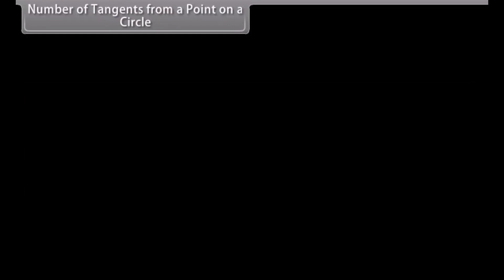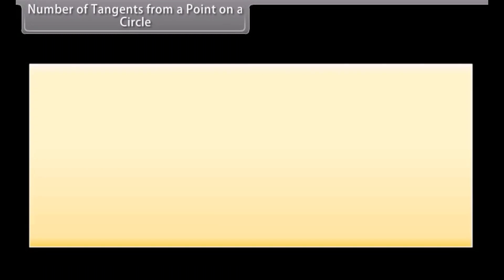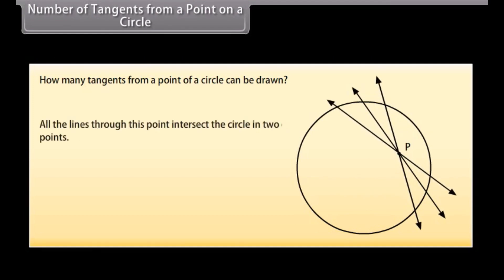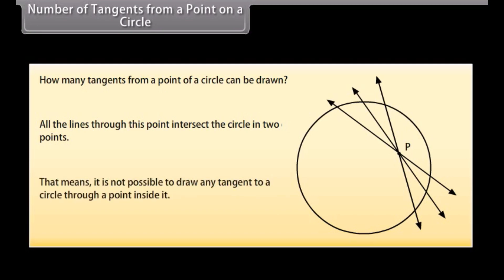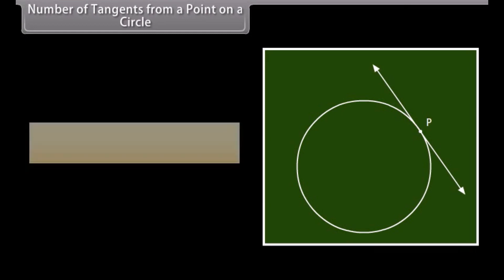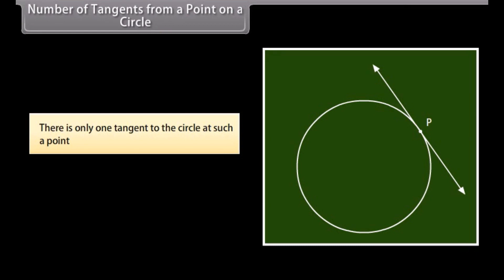Number of tangents from a point on a circle. Can you guess how many tangents from a point of a circle can be drawn? Let's perform an activity. Draw a circle and take a point P inside it. Draw lines through this point. We will find that all the lines through this point intersect the circle in two points. That means it is not possible to draw any tangent to a circle through a point inside it. The other case is to take a point P on the circle — we can observe that there is only one tangent to the circle at such a point.